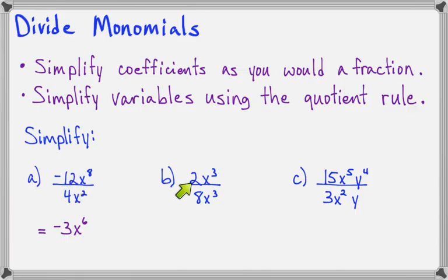Now let's look at 2x to the 3rd divided by 8x to the 3rd. We know that 2 divided by 8 simplifies to 1/4, and we know that x to the 3rd divided by x to the 3rd simplifies to x to the 0, but x to the 0 is 1, so we really don't have to write times 1. It's enough to write 1/4.